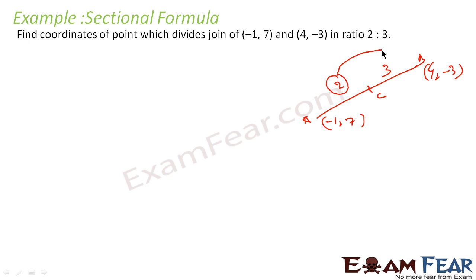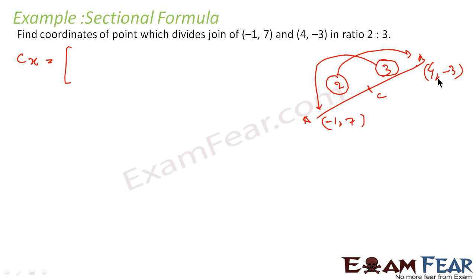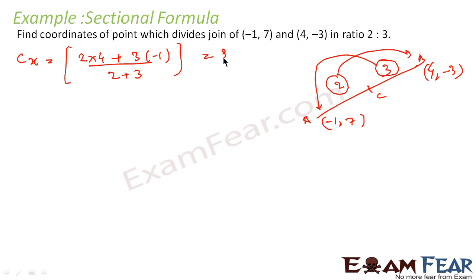You take the first ratio value and multiply with the far x-coordinate, then take the second ratio value and multiply with the near x-coordinate, and divide by the sum. So for the x-coordinate of C: take 2 and multiply with 4, plus take 3 and multiply with -1, divided by 2 plus 3. This becomes (8 - 3) / 5, that is 5/5, which equals 1.